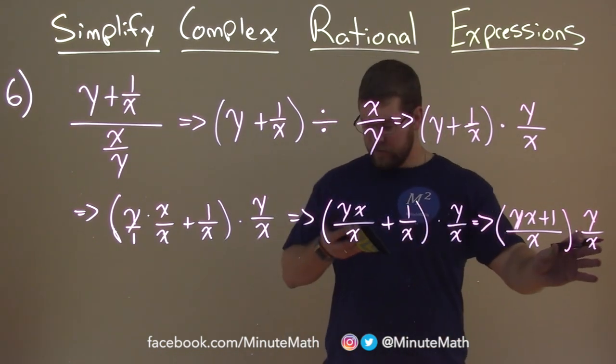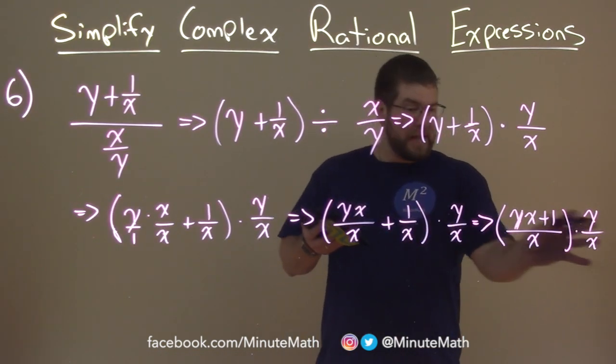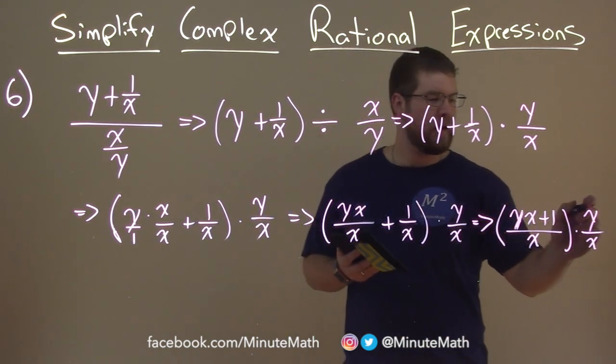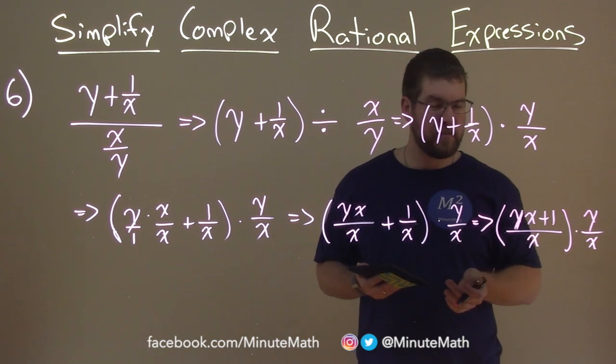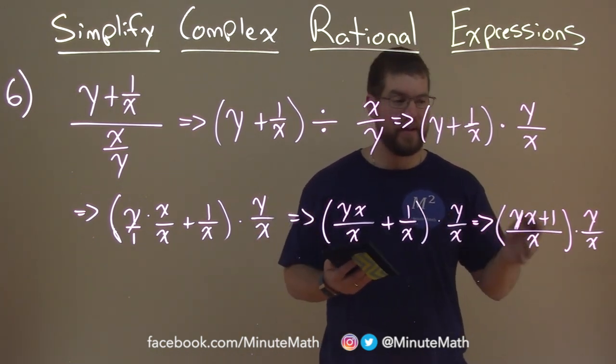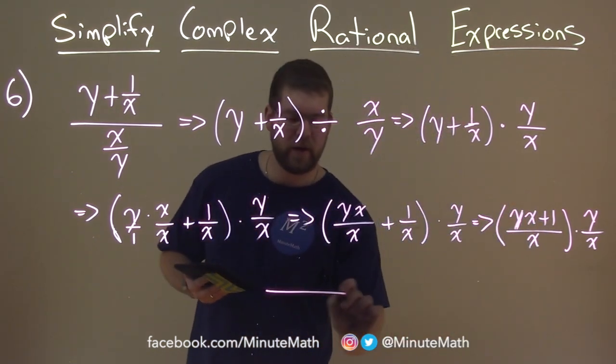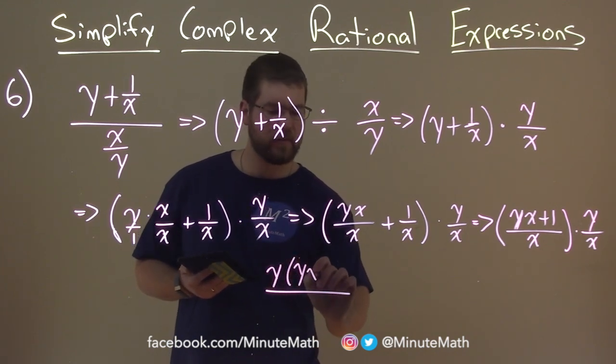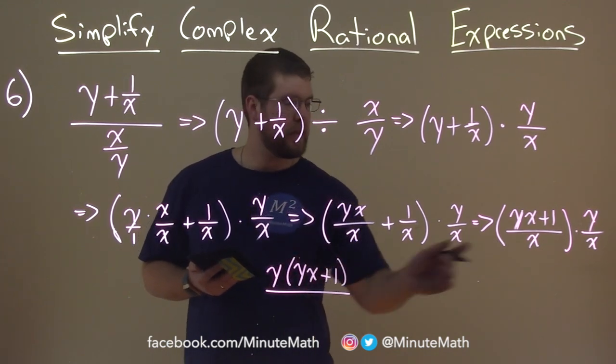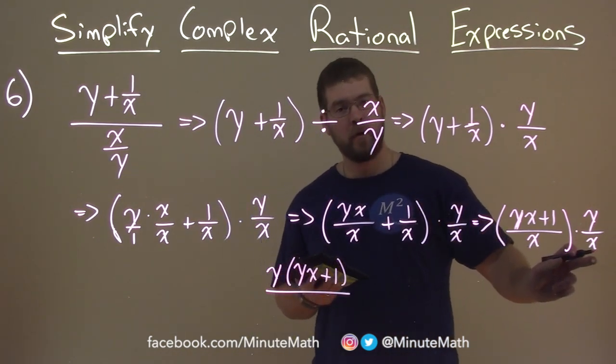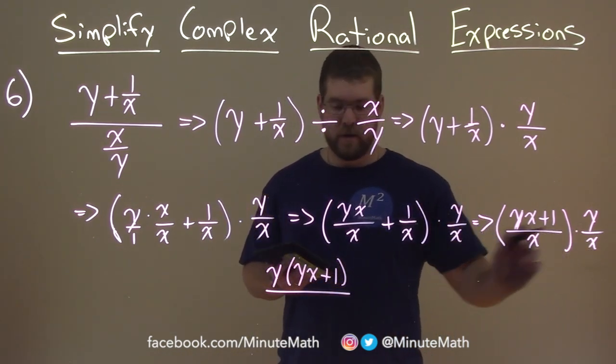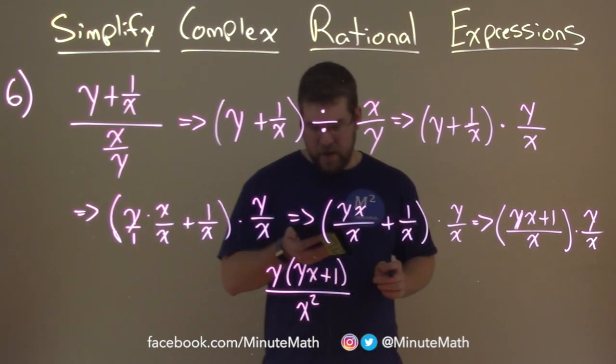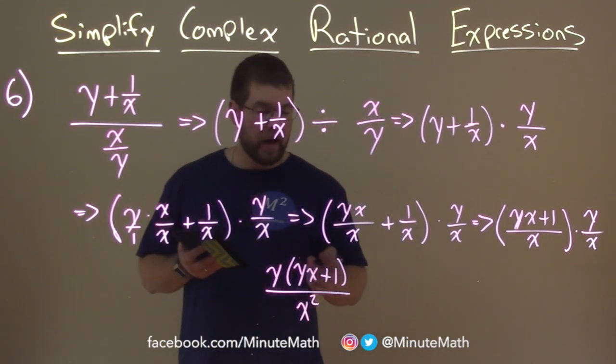Okay? And so now we can really, hypothetically, we can combine this together. Now, there's two ways to go about it. You can think about distributing the y to both parts. But personally, I like that it's already kind of factored out. So I'm going to write it as such. I'll put the y out front first. y times yx plus 1. The denominator is being multiplied. Now be careful, right? We have multiplication going on here. So it's x times x is x squared.